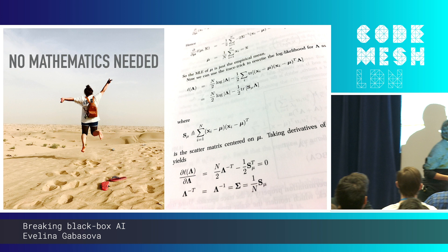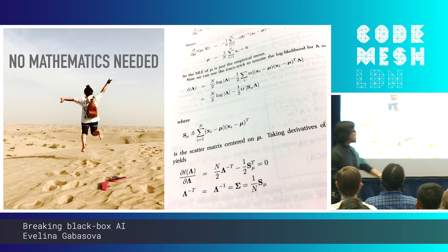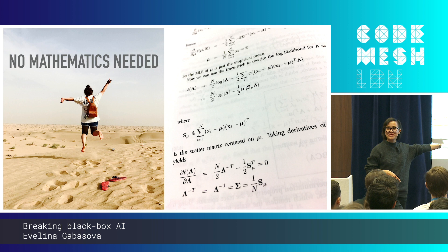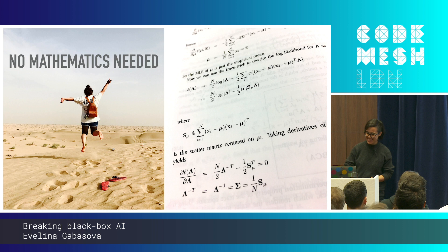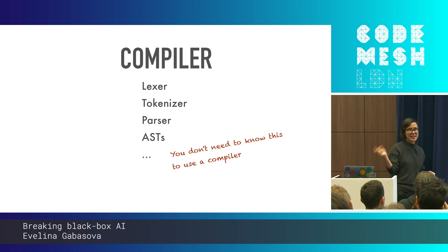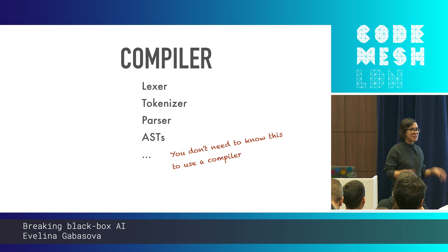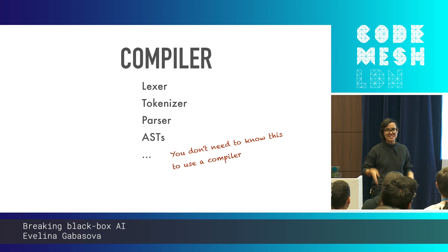This is what you needed to understand if you wanted to do machine learning 10 years ago — I just opened a random book that was behind me in my office. This is what you need to do if you want to do machine learning now: nothing, basically. I like to use the metaphor of a compiler. When you are using a compiler, you don't have to understand what's happening underneath.